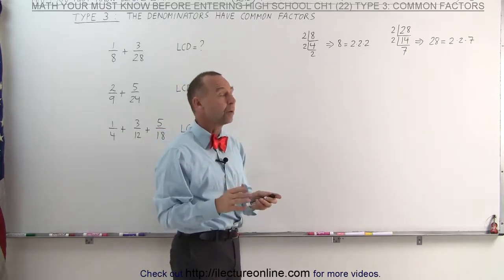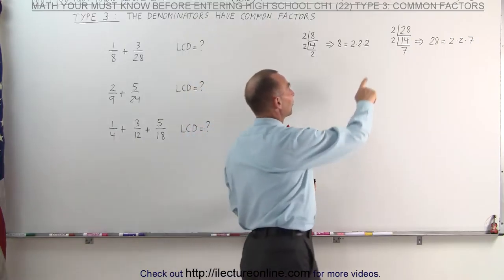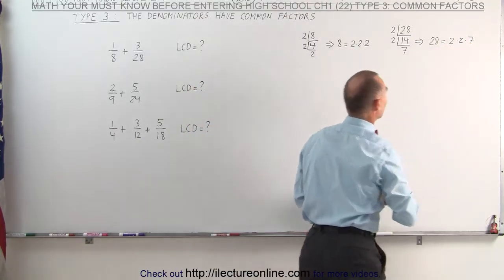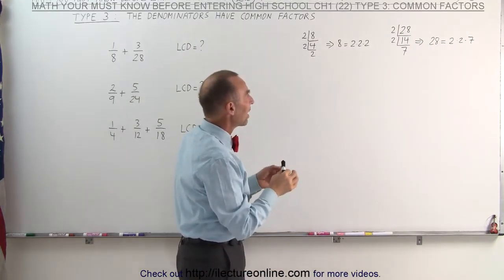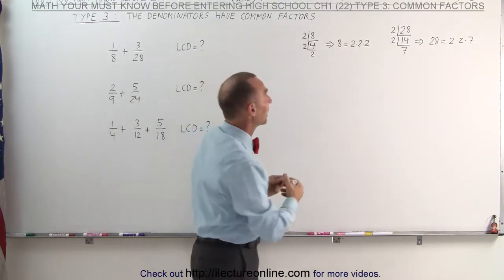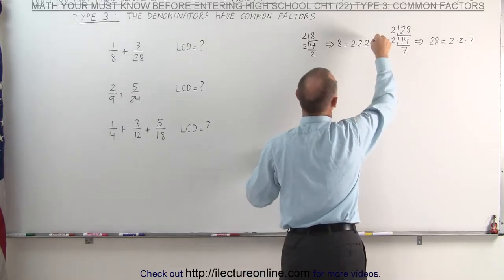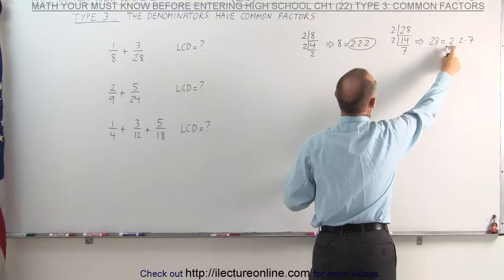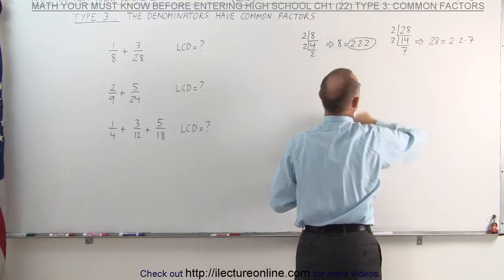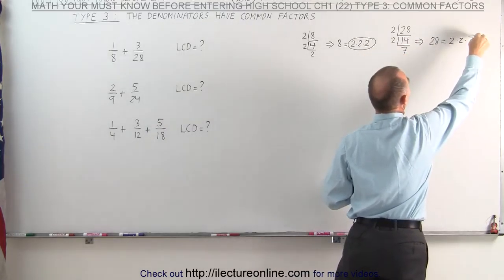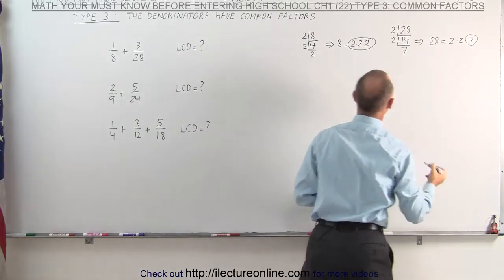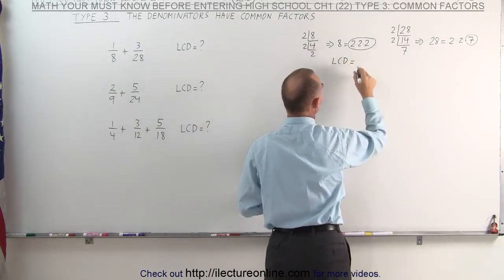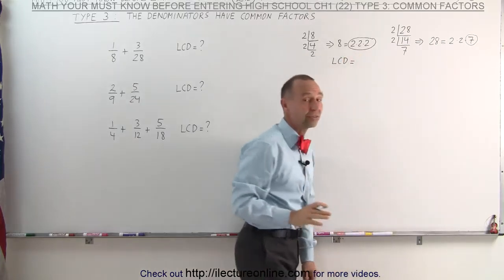What we're going to do now is find all the prime factors. We have 3 twos here, we have 2 twos there, and we have 1 seven there. We will circle each prime factor where it occurs the most. In this case we have 3 of them, so we're going to circle these. We don't have to circle these 2 because there's only 2 of them here and there were 3 of them here. But we have 1 seven there, so we have to circle that one. Now we can say that the lowest common denominator is simply the product of all the prime factors that we circled.